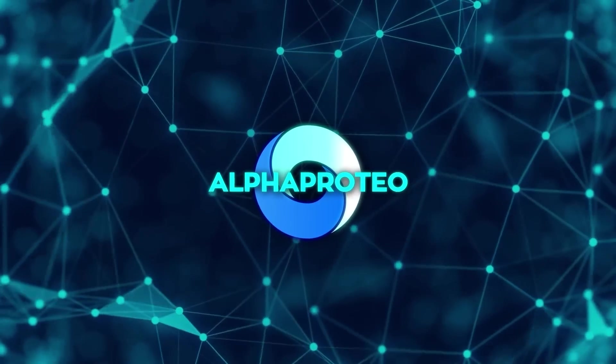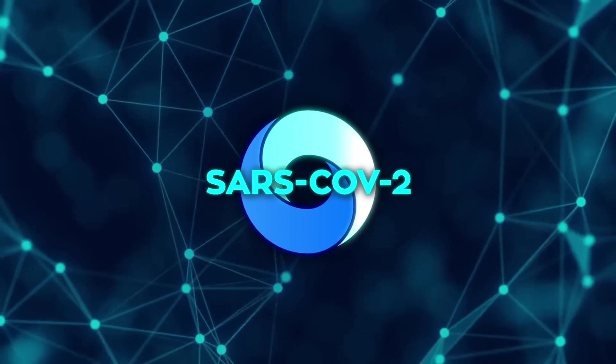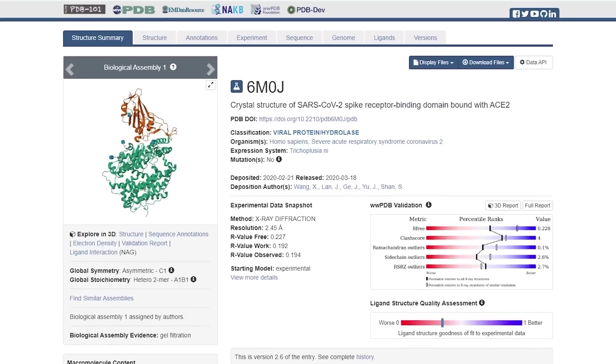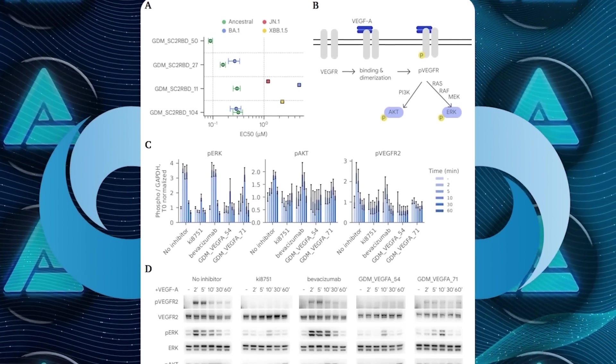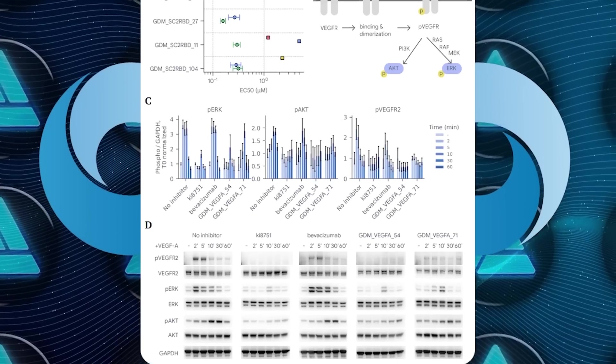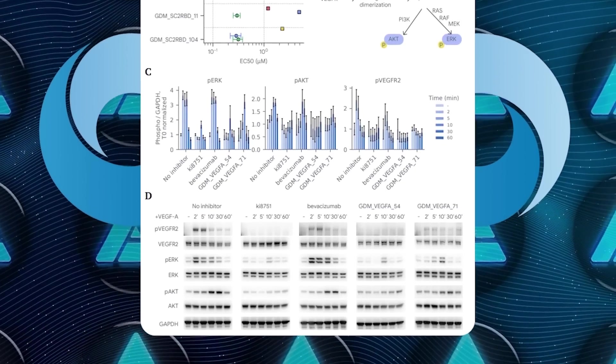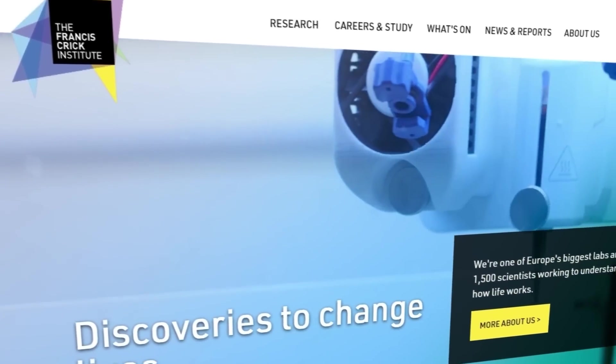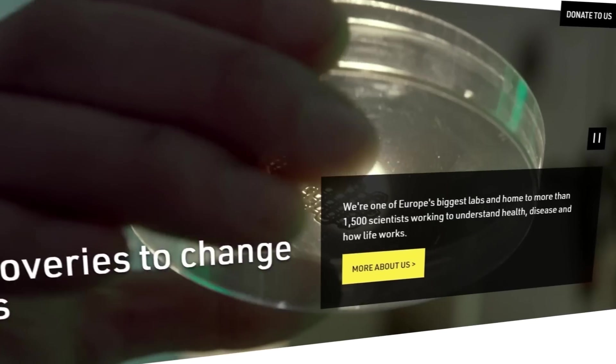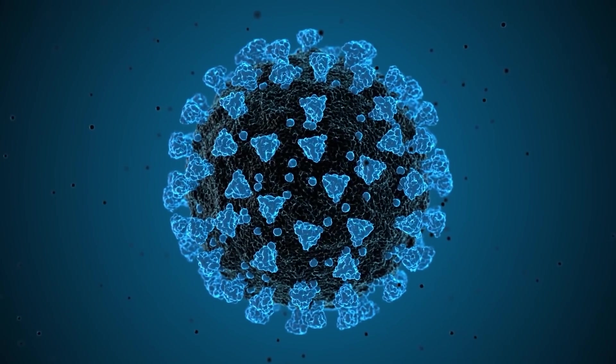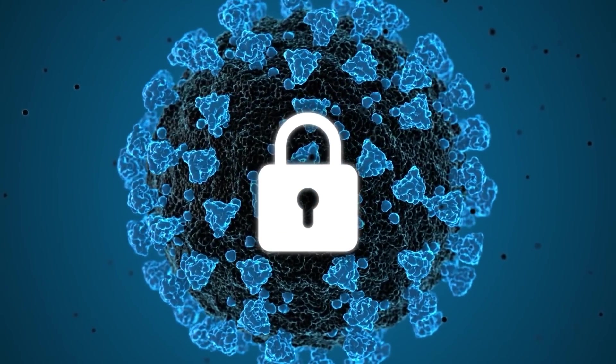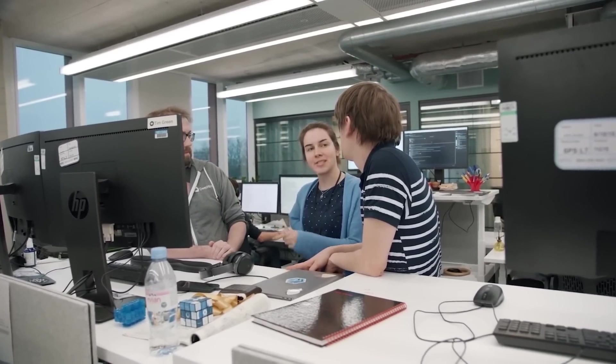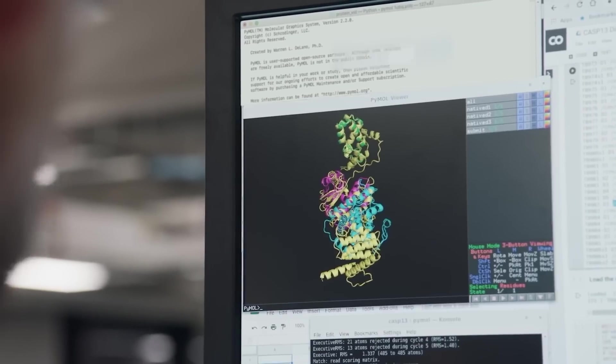Now, one of the most hyped targets was the SARS-CoV-2 spike protein, the very same spike that helps the virus get into our cells. And yeah, AlphaProteo nailed it. Not only did it design binders for this spike protein, but those binders were tested by some top research groups like the Francis Crick Institute, and they confirmed the binders were legit. These binders even managed to block the virus and some of its variants from infecting cells. So we're looking at something that could potentially help in virus prevention.